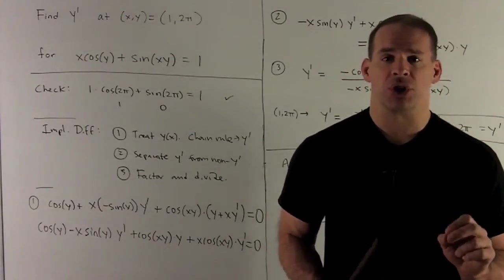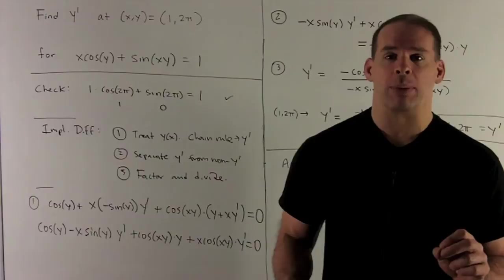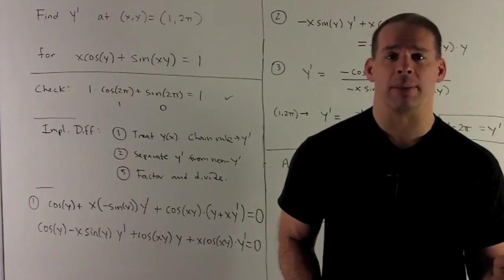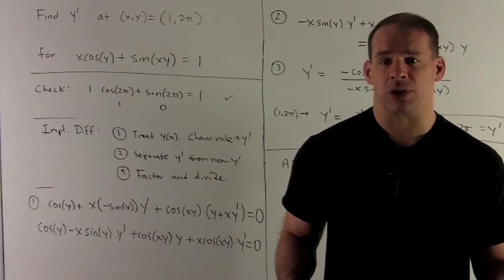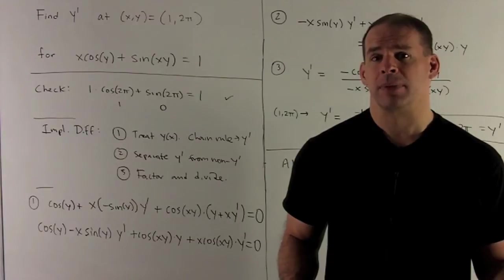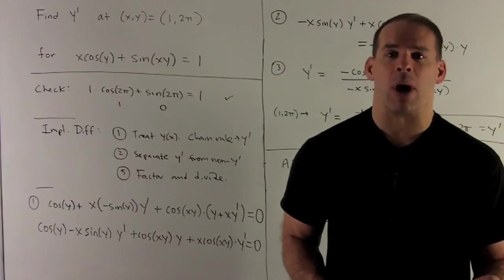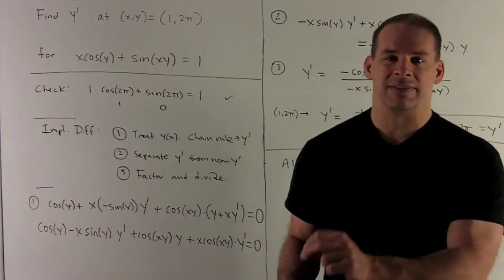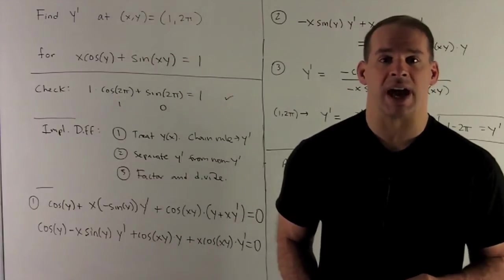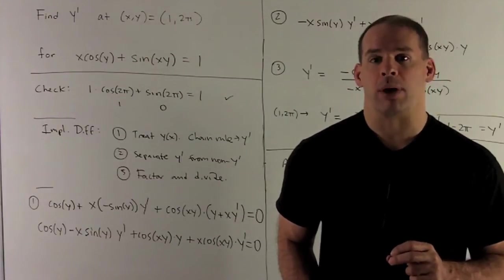Then we'll need to clean up with algebra to get y prime by itself. The way you do that is, you're going to separate your terms by, do they have a y prime in them, or do they have no y prime in them, put them on other sides of the equality, and then factor out y prime on its side, divide by whatever is left over on both sides. That gives you y prime by itself.